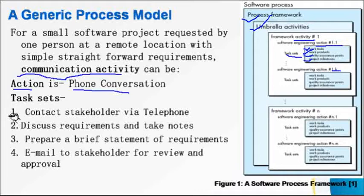The work product we get is a requirements document reviewed by the stakeholder. We have also applied the quality assurance point and project milestone. For example, for one functionality where we are clear on what needs to be developed, we have achieved that milestone because the customer has given approval for it.